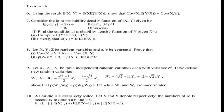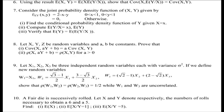Question 10: a fair die is successively rolled and X and Y denote respectively the number of rolls necessary to obtain a 6 and a 5. Find E[X], E[X|Y=1], and E[X|Y=5]. Write down the probability mass functions for X and Y and compute these expectations. This should be straightforward computations using what we already handled for the case of rolling until a 6 shows up.